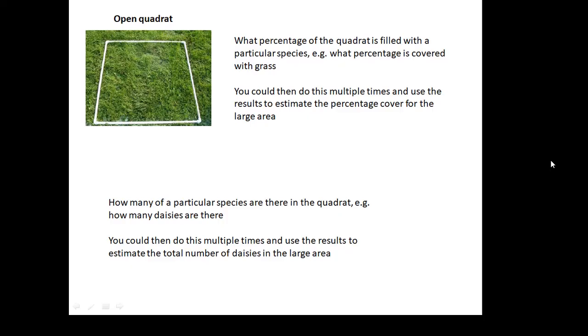How do you use them? Well, an open quadrat, what you might do with it is, let's say, I want to know what percentage of the quadrat is covered with a particular species. Or how many of a particular species there are in the quadrat. Or what percentage of the quadrat is covered with grass. And then you would do that multiple times. You do it maybe 10 or 20 times randomly over the field. Okay? And then use that data to calculate a value for the whole field.